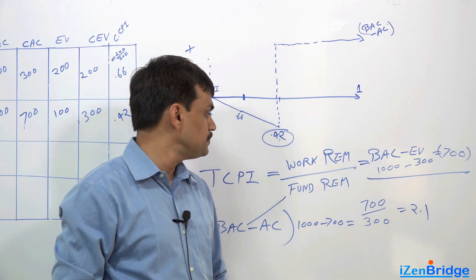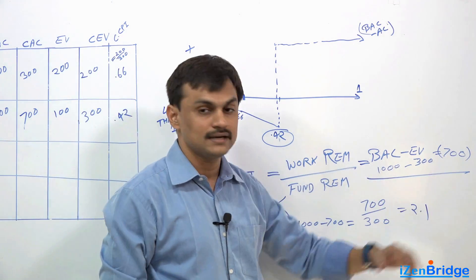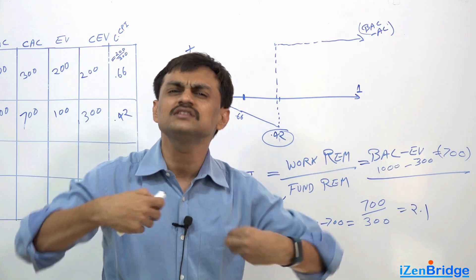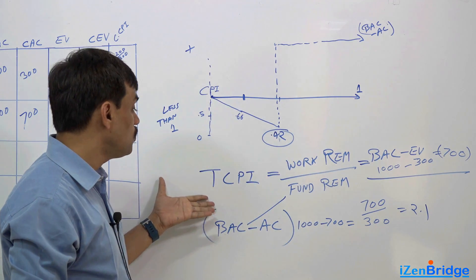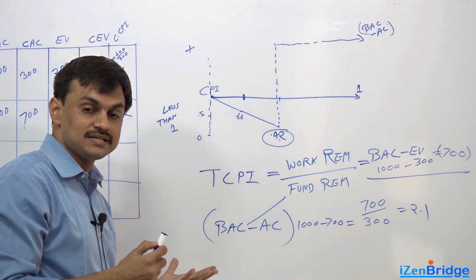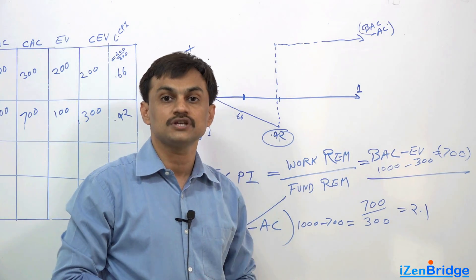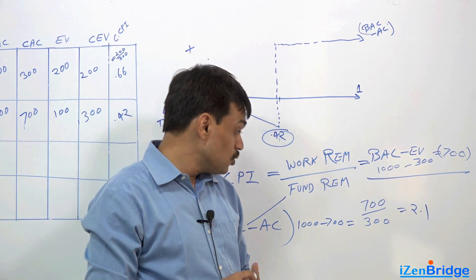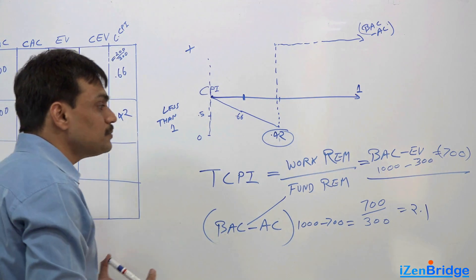Now the second possibility could be: looking at the situation, manager says okay, you have work left of $700, let me give you $1000. So then you have a new fund remaining. You have a new estimated completion. It says that the current estimated completion, which the budgeted completion was $1000, looks difficult. So why don't I give you a little bit more money?